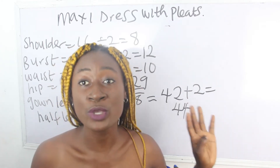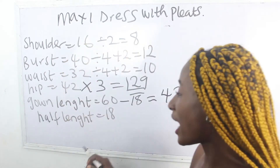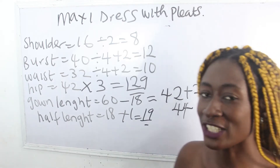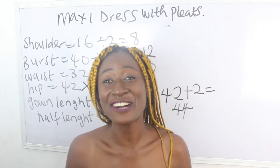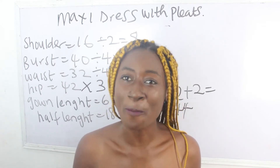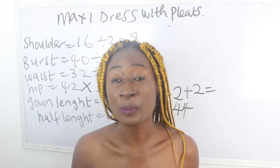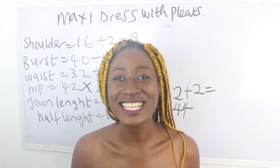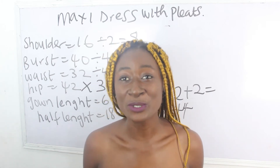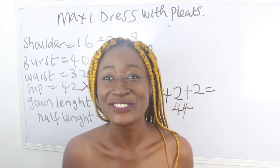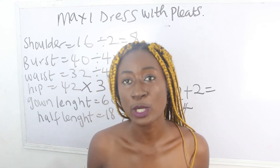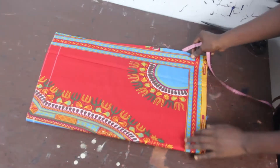Our half length is 18 plus 1 inch for seam allowance, giving us 19 inches. Those are the basic measurements required to achieve your maxi gown with pleats. Please don't forget to like, share and subscribe, and feel free to drop questions in the comments. Online and physical training are available — details are in the description box. Now let's move to the cutting part.